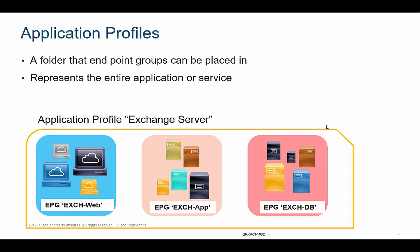Notice here, I have one EPG created for web servers, a different EPG for Exchange app servers, and a third EPG for Exchange database servers. One cool thing you can do in ACI is view the application from a network health perspective — you can click on the application profile inside the APIC GUI and view the health score, or do it per EPG as well.